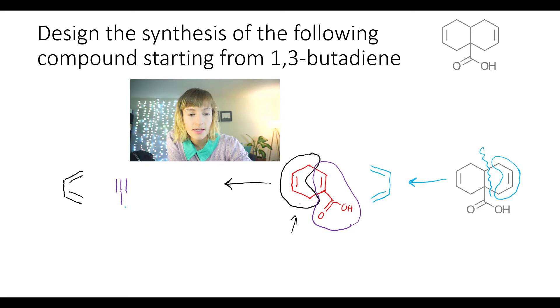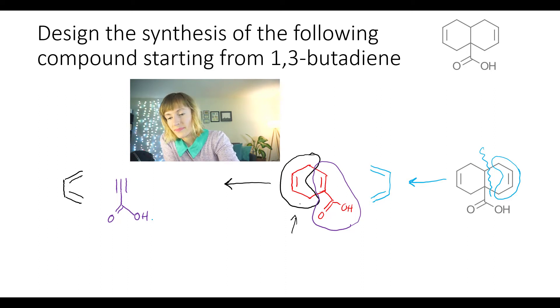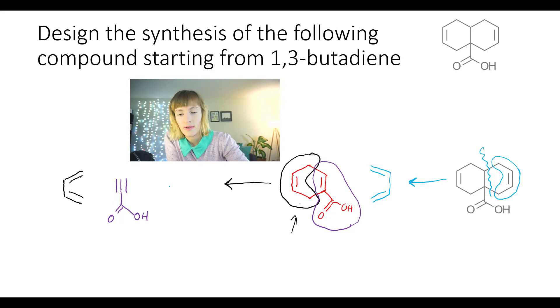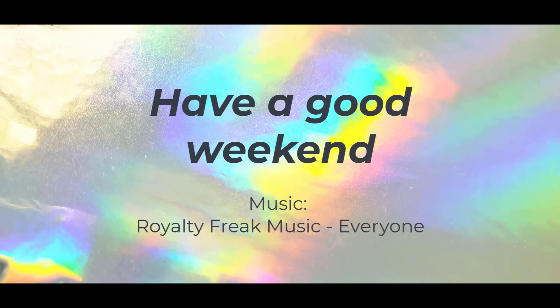This purple portion used to be a dienophile — notice that it has a double bond after it reacted with butadiene. That means that prior to the Diels-Alder reaction, there used to be a triple bond, because triple bonds, when they react as dienophiles, get reduced to double bonds. So our initial reagent was this compound — an alkyne with a carboxylic acid on it. That means that in order to make this desired product, you will have to start with two equivalents of 1,3-butadiene and use this alkyne with a carboxylic acid on it. Hopefully this video was helpful and you're starting to get a hang of these Diels-Alder reactions. Let me know if you're still struggling with anything or if anything was unclear, and otherwise have a good weekend and I'll see you next week.